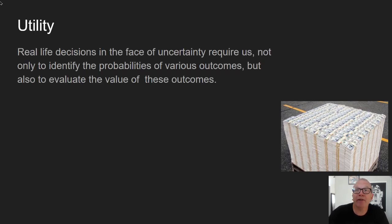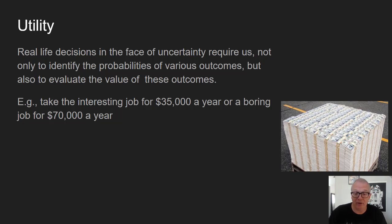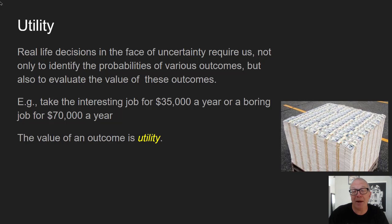When we make real-life decisions in the face of uncertainty, that requires us not only to identify the probabilities of the various outcomes, but also to evaluate the value of these outcomes. Expected value theory gives us a way to quantify, weight, and average decisions so we can figure out what decision is better. It's a way to be rational in our decision-making — you've got complicated choices, like taking an interesting job for $35,000 a year versus a boring job for $70,000 a year. The most basic component of this is the notion of utility.